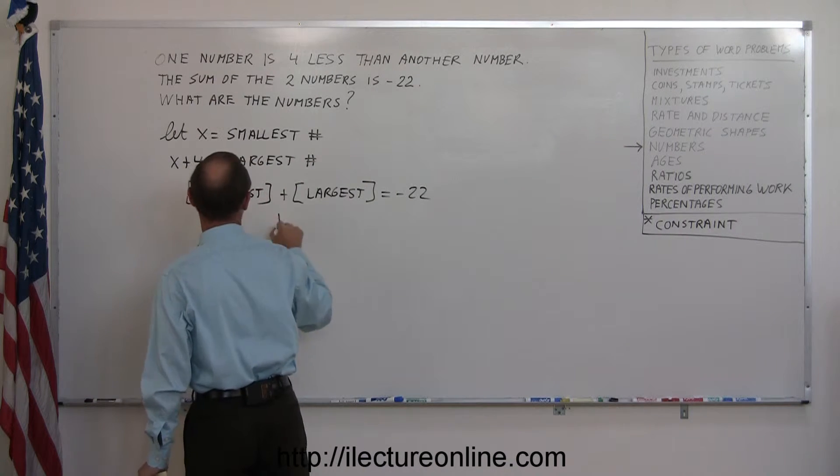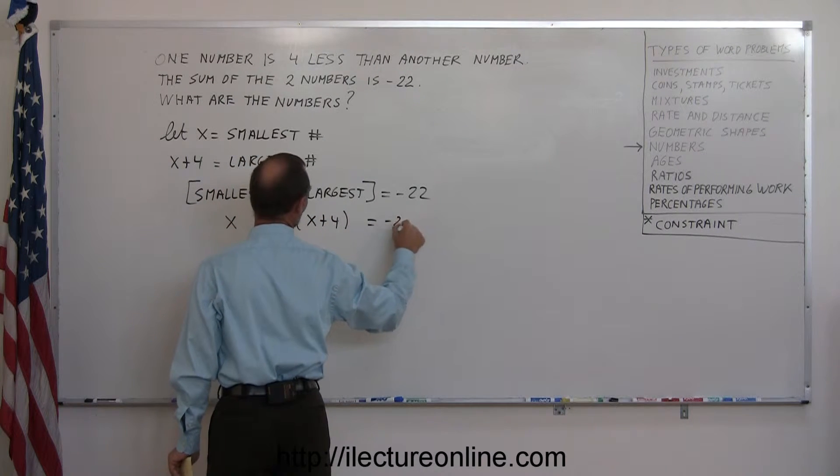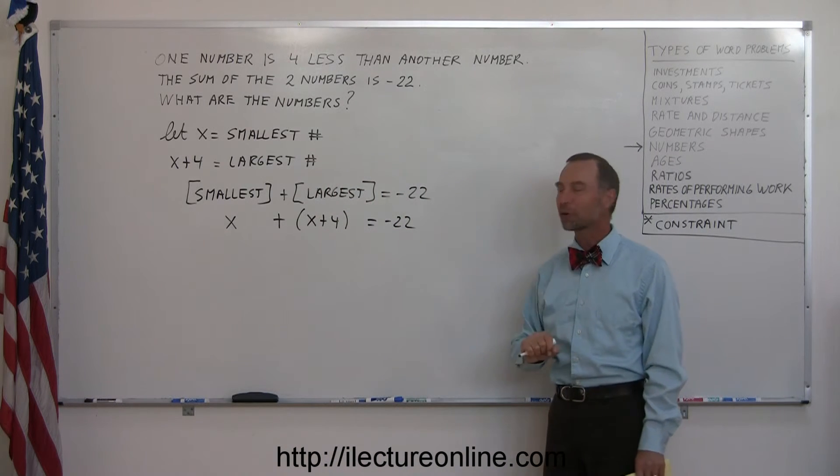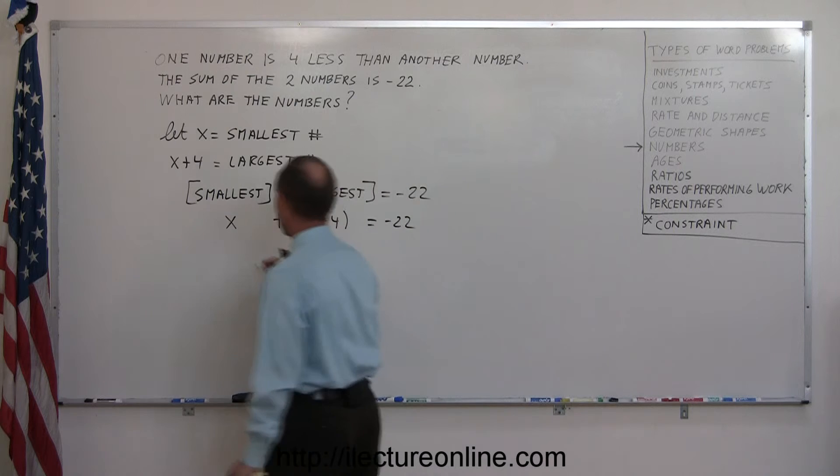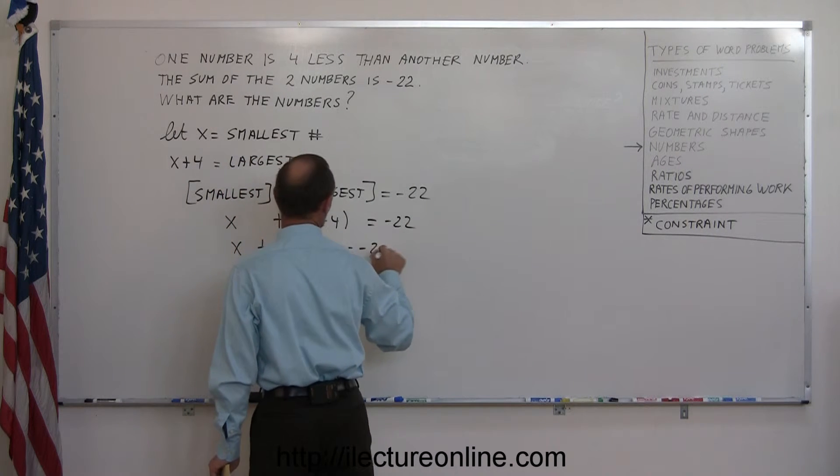So now we have x plus x plus four equals minus 22. We have a familiar linear equation. Let's get rid of those parentheses: x plus x plus four equals minus 22.